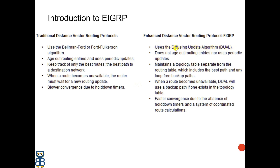The enhanced distance vector routing protocol does not send periodic updates. It maintains a topology table containing successor and feasible successor entries, and the DUAL algorithm helps EIGRP to perform fast convergence. If the primary route becomes unavailable, there are many more advantages with the enhanced version that we will explore in coming sessions.